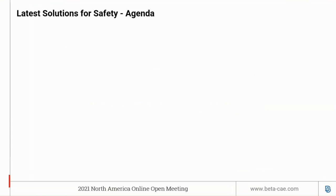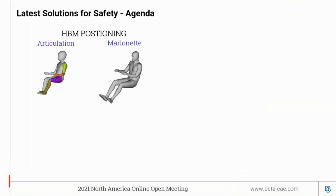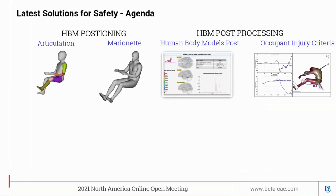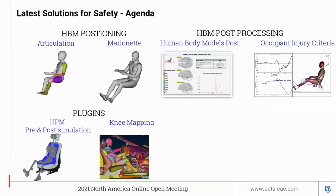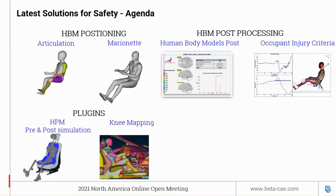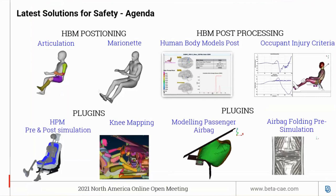In this session we'll be introducing new enhancements in ANSA and META for the safety domain. We have added a new tool in ANSA for human body model positioning: the articulation tool. The existing Marinty tool has been updated to accommodate HBM models. We have also added a new tool in META Post, namely the human body model post, for post-processing human body models using D3 plots. The existing OIC tool has been updated to extract occupant engineering results from human dummy models. Two new plugins are introduced to assist the user for Euro NCAP and CAP.